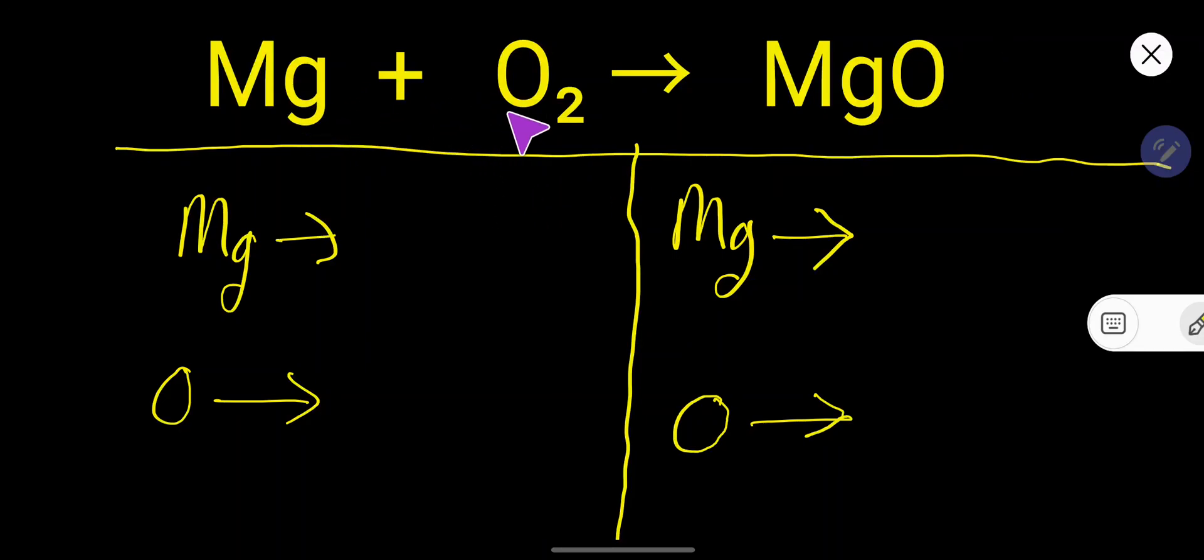How to balance Mg plus O2 yields MgO, that is magnesium, oxygen, and magnesium oxide.